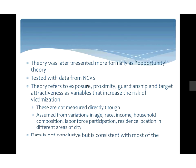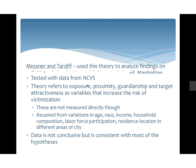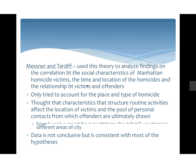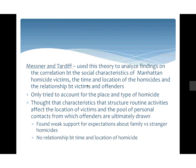This theory was later presented more formally as an opportunity theory using data from the National Crime Victimization Survey. They looked at exposure, proximity, guardianship, and target attractiveness as factors related to victimization, assumed through characteristics like age, race, income, residence, and location. While the data is not conclusive, it is consistent with most of the theory. Research on Manhattan homicide victims looked at the relationship between social characteristics, time and locations of homicides, and the relationship between victims and offenders — they found weak support for expectations about family versus stranger homicide, and no relationship between time and location of homicide.